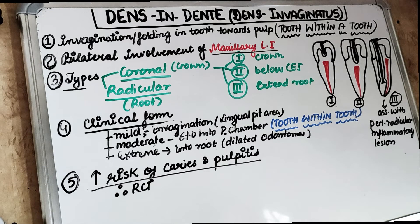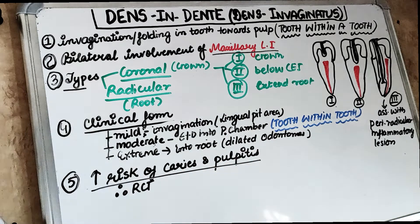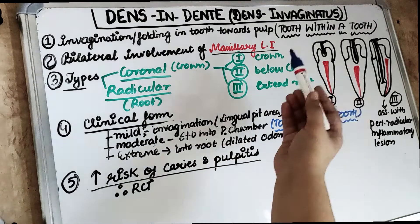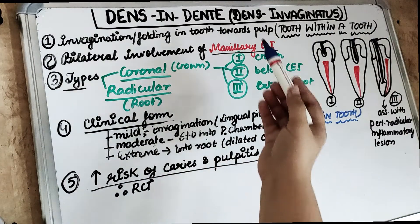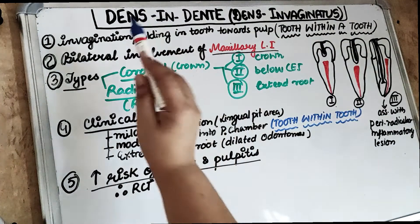Welcome to the 5 in 5 series, where we cover each topic under 5 headings in 5 minutes. Before we get started, make sure you subscribe to our channel and click on the bell icon so that you don't miss any of our future videos. Today's topic is Dens in Denti, or Dens in Vaginatus.